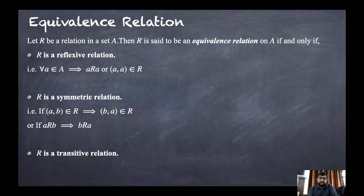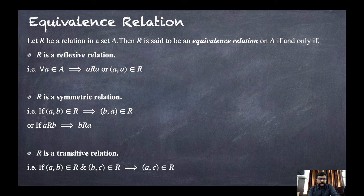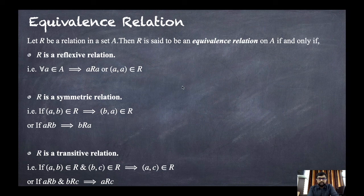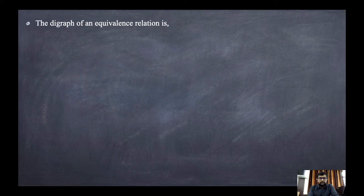The third condition: R has to be a transitive relation. If (a, b) belongs to R and (b, c) belongs to R, then (a, c) belongs to R. In short, if a is related to b and b is related to c, then a has to be related to c. So a relation that is reflexive, symmetric, and transitive is called an equivalence relation.